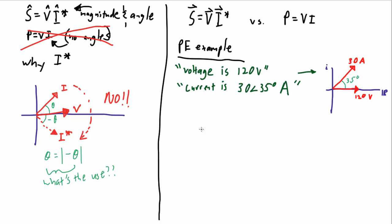So, in this case, you would only really need to use the simplified P equals VI formula. The PE has set the question up to make the voltage vector at zero.